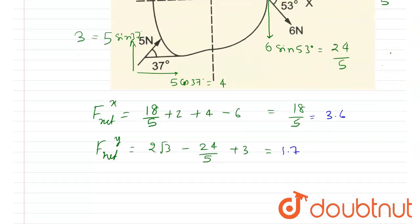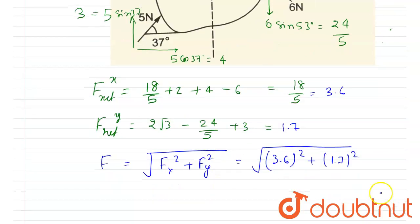So we want the net force, so you will just add the two. You will write F is equal to under root of Fx square plus Fy square, right? So I will write 3.6 whole square plus 1.7 whole square. So after solving, you will get the net force is equal to 4 newtons.